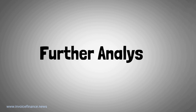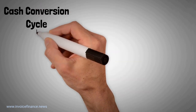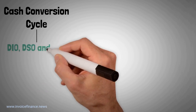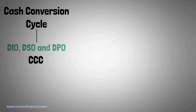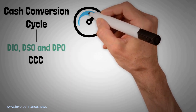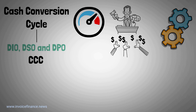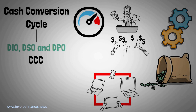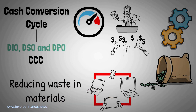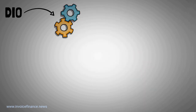Further analysis. The cash conversion cycle identifies three financial levers: DIO, DSO, and DPO. Change any of these three numbers and the CCC is altered. Thus, a company should look at how to speed up production and how to sell its products faster. This could be achieved by scrutinizing the production process, by investing in better technology to increase productivity, and by reducing waste in materials. DIO improvement involves improvements in both production systems and marketing.